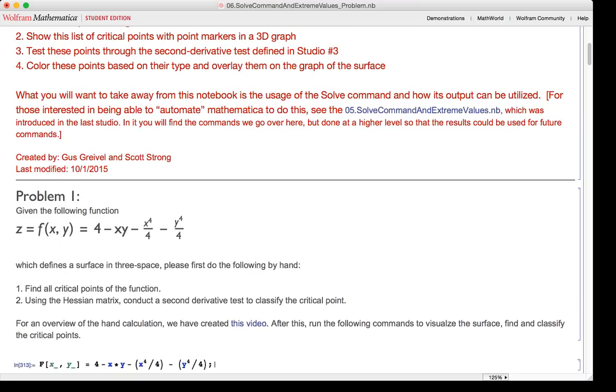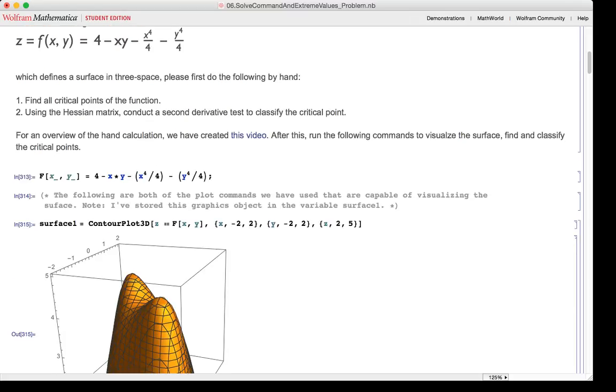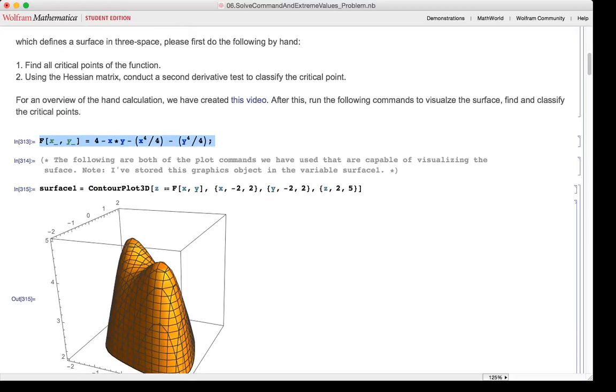So the first function we're going to analyze today is f of xy equals 4 minus x times y minus x cubed over 4 minus y cubed over 4. This surface is plotted via the contour plot 3D. The contour plot 3D takes a command and then the domain over which you want to plot the function that is in the first manual input of the command.